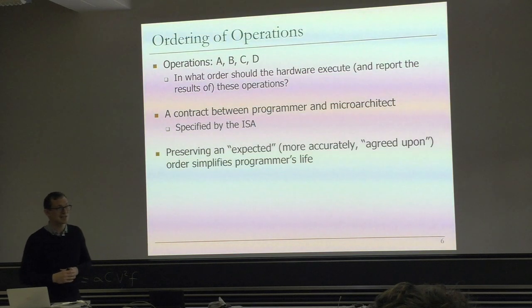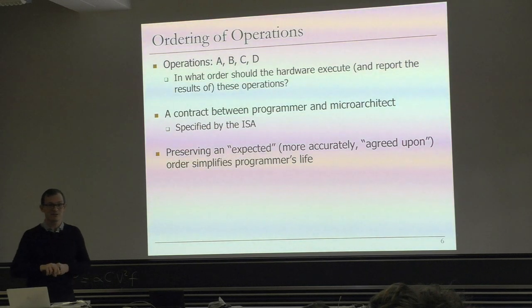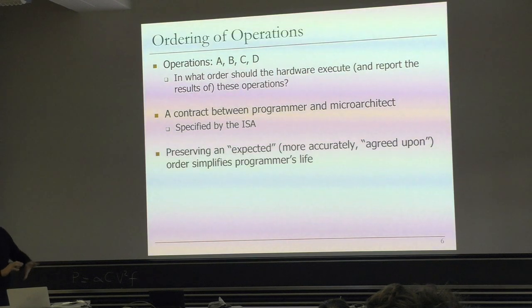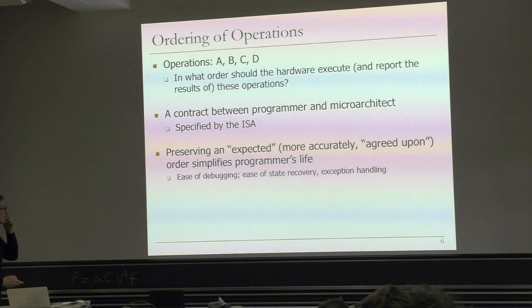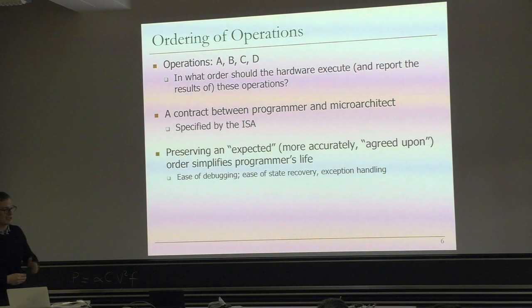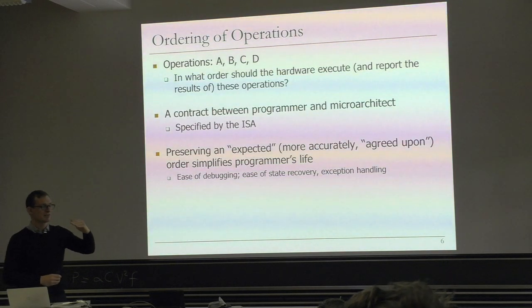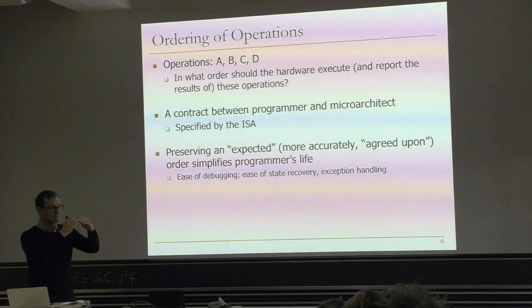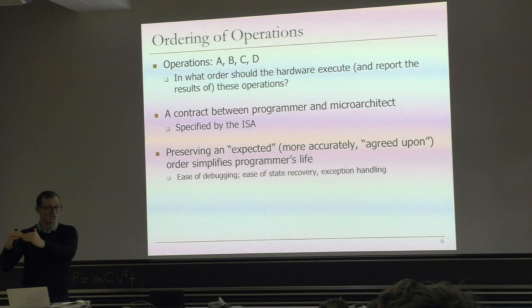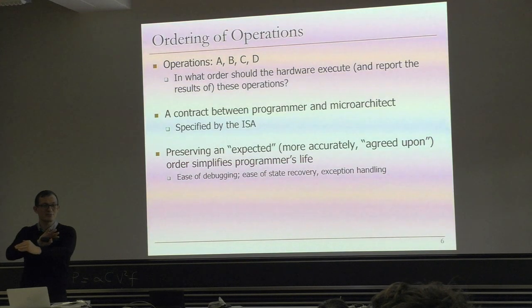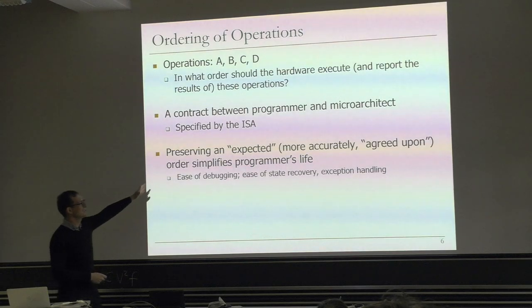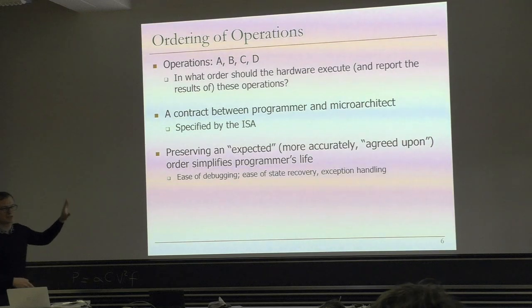Out-of-order machines became successful only in the 1980s when people figured out that you should reorder operations inside the hardware and report them back in the order the programmer expects. Now you satisfy the programmer — even though you break the rule internally, what you expose to the programmer is what you promised. This enables easy debugging, easy state recovery, and easy exception handling. You can rely on a precise state in the program — you know the machine has definitely finished a given instruction and nothing else after that has been reported.